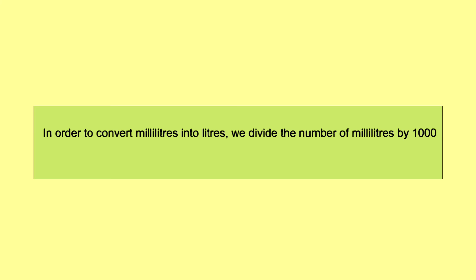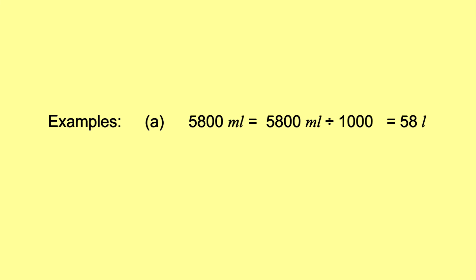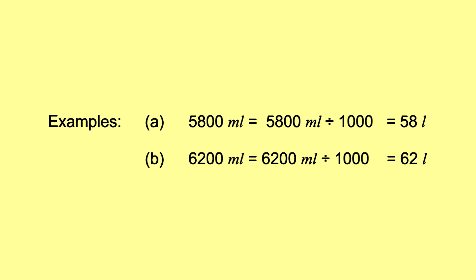In order to convert milliliters into liters, we divide the number of milliliters by 1000. We take the quotient as liters and the remainder as milliliters. Example: 5,800 mL ÷ 1000 = 5 liters 800 mL. 6,200 mL ÷ 1000 = 6 liters 200 mL.